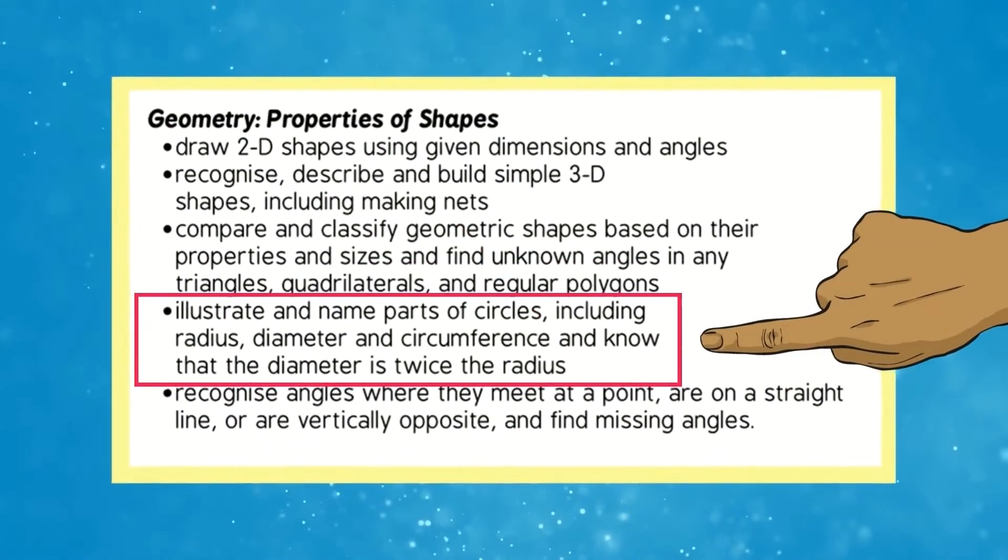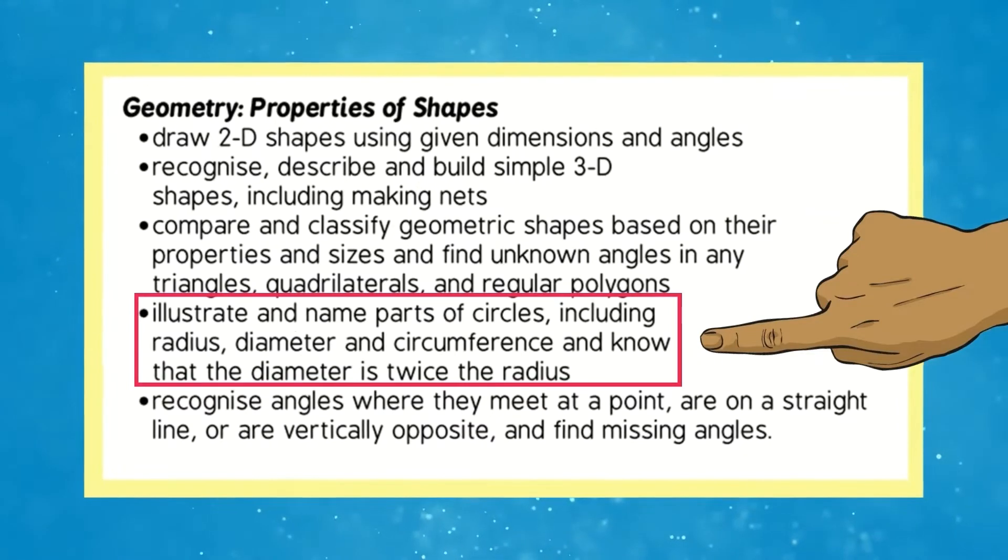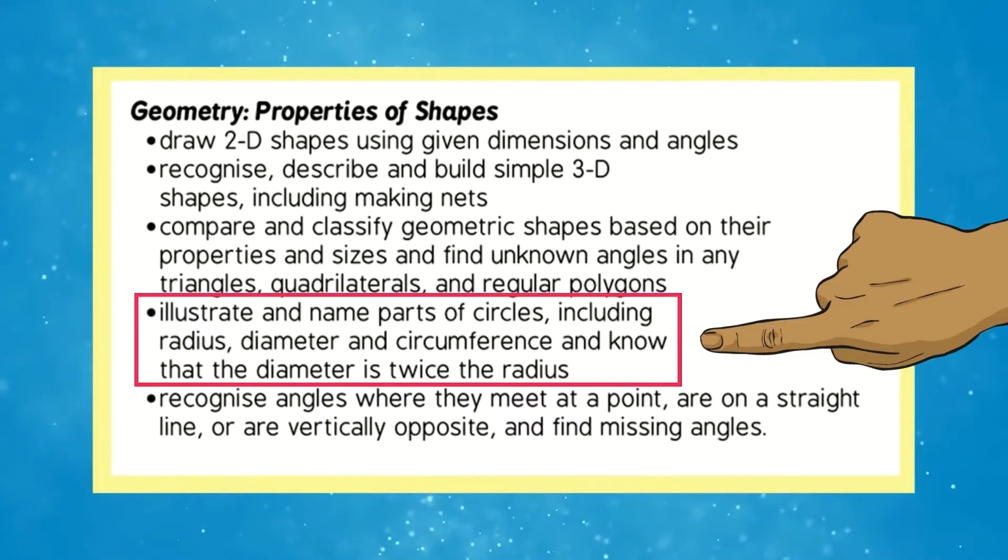As children move through school, during year 6 maths lessons about properties and shapes, your children will learn about the radius, diameter and circumference of circles. Children will be expected to draw circles and label the parts.